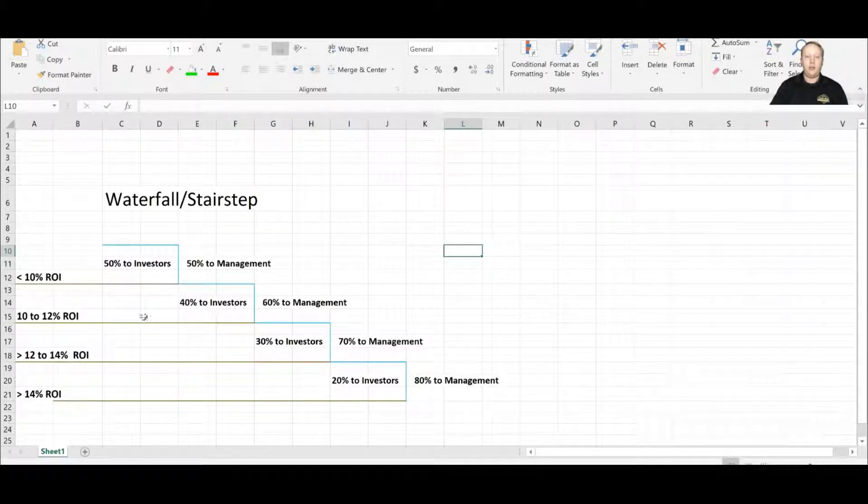Now let's say our profits go past 10% or reach 10% to 12%. So in this range, we now do 40-60. So it's 40% to investors, 60% to management, but the previous step still applies. So anything before 10% is still split 50-50, and then everything 10% to 12% is now split 40-60 in favor of management. So our next step in the waterfall would be anything greater than 12% up to and including 14%. So now on this step, only 30% of it goes to the investors and 70% to management. Now we're getting to the last step of our waterfall. So 14% and greater, 80% of that's going to go to management and only 20% of it's going to go to investors.